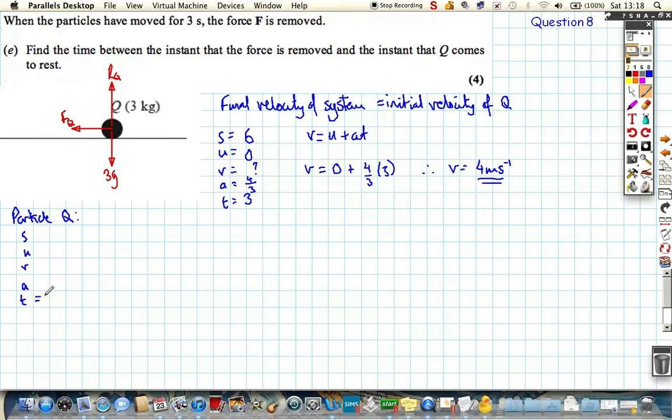We want to find out the time before it comes to rest, so we want to know its final velocity is 0, we know its initial velocity was 4, based on the final velocity of the system, we don't know how far it travels, and we don't know its acceleration. Although we can now calculate acceleration. That would be useful. If we could calculate acceleration, we can use V equals U plus AT again.